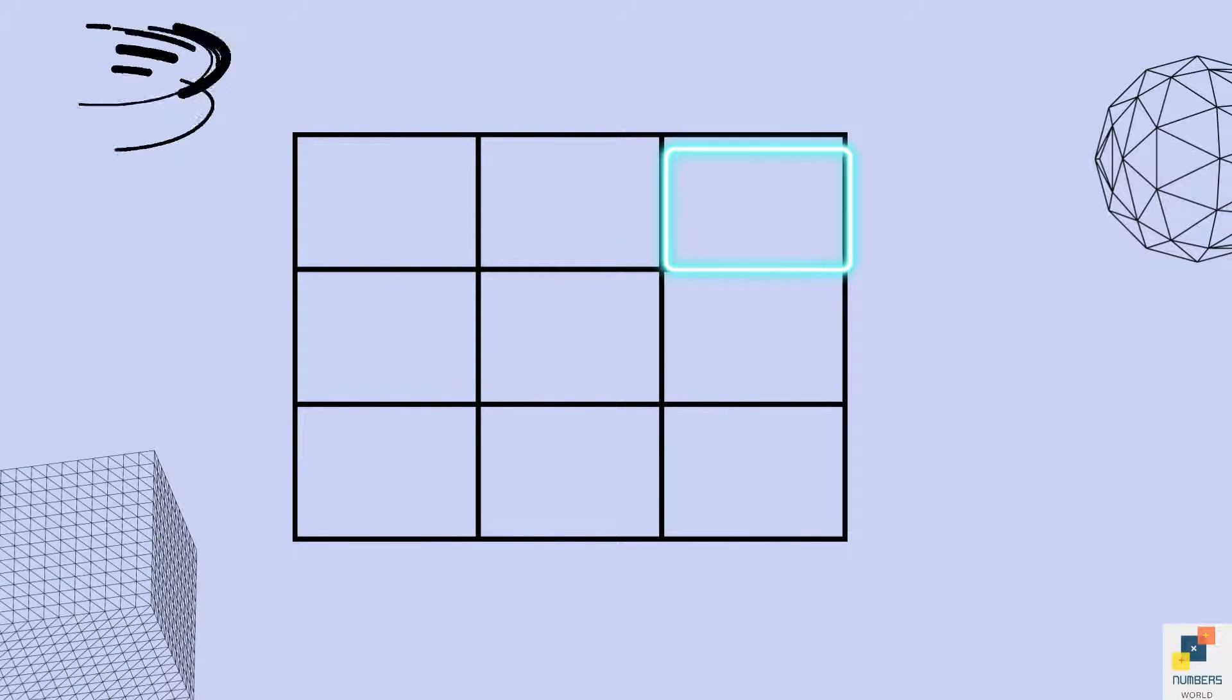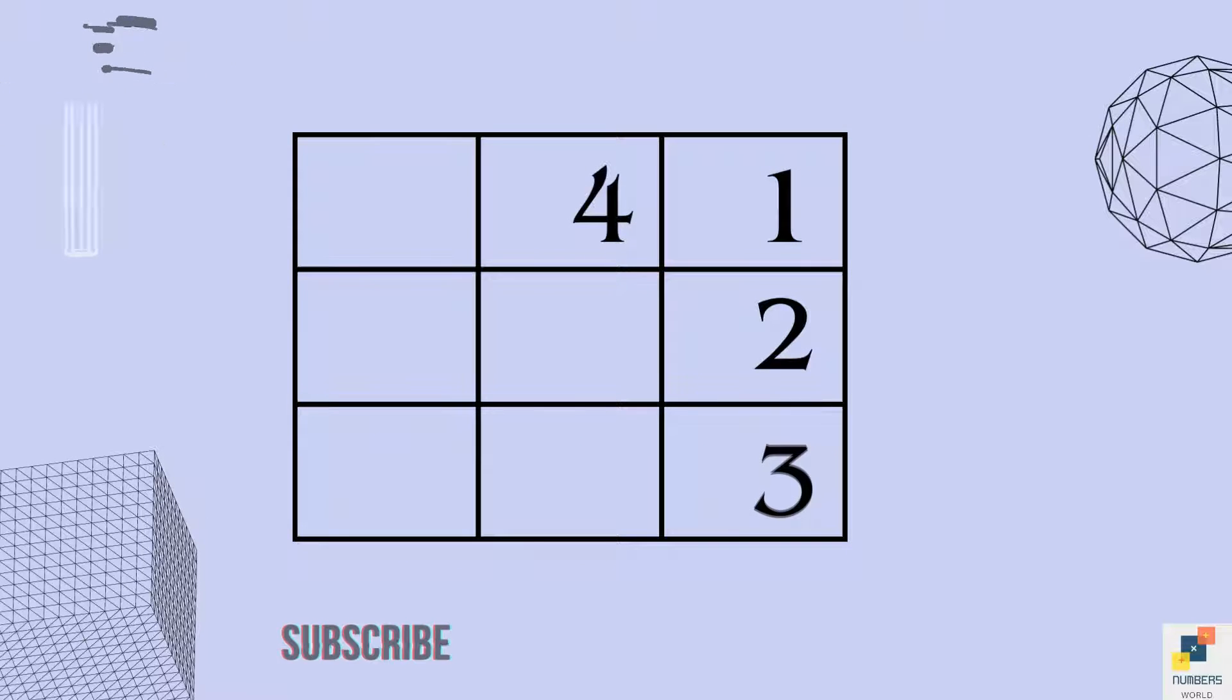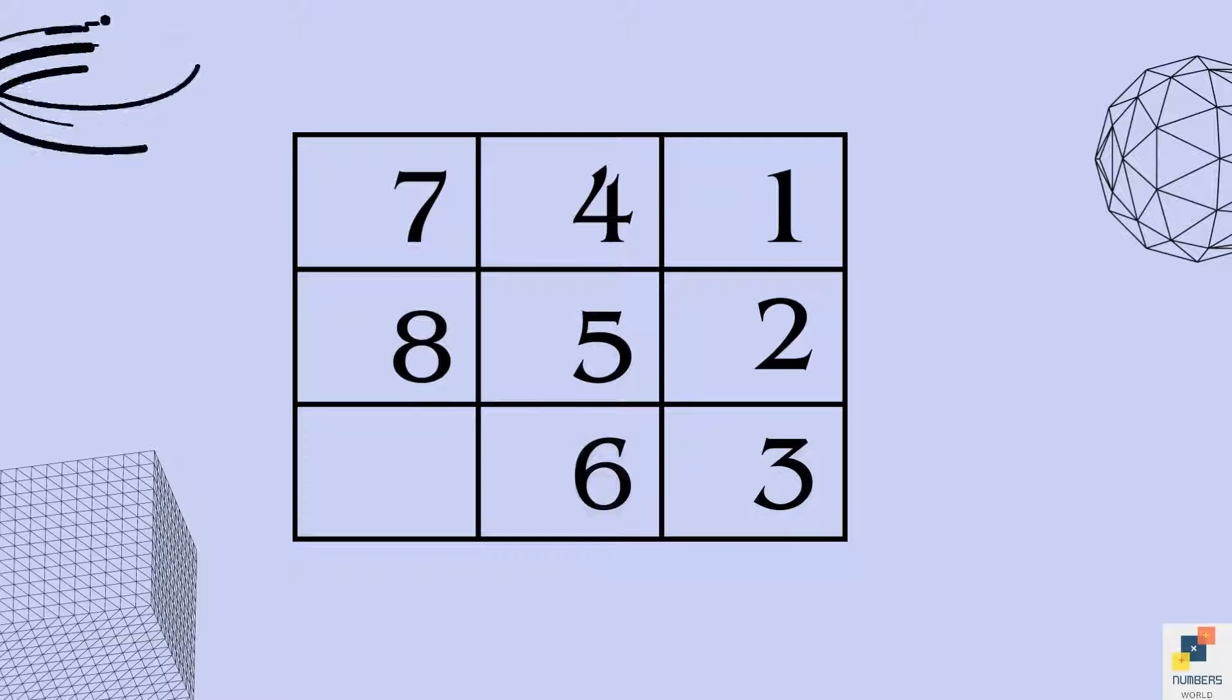Then start writing the numbers from top right box. So let's just do it. 1, 2, 3, 4, 5, 6, 7, 8, 9.